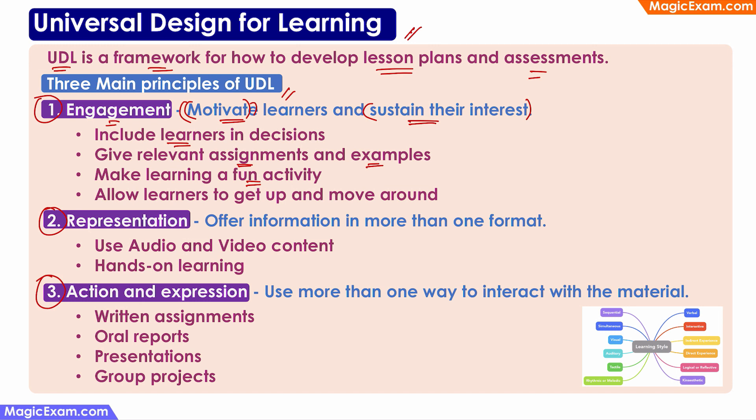And you should allow learners to get up and move around. In a traditional classroom, students are expected to sit in one place without moving for long periods of time. But that makes them get very bored, especially children. So you should make sure that your classroom gives an opportunity for learners to get up and walk around every now and then. Then we come to representation. Representation means that whatever information we are trying to give the children in the classroom, we should give it in more than one format.